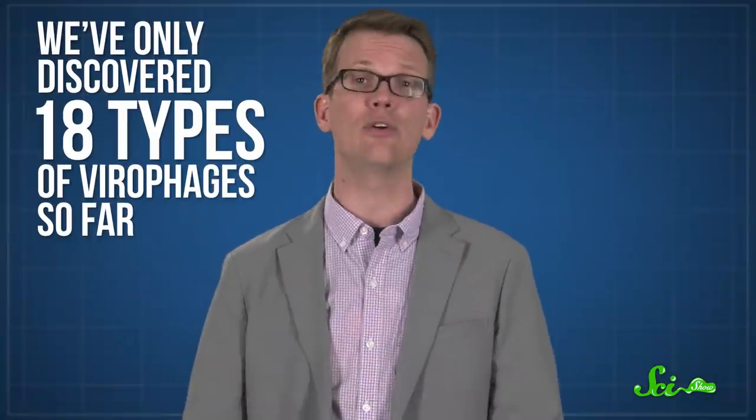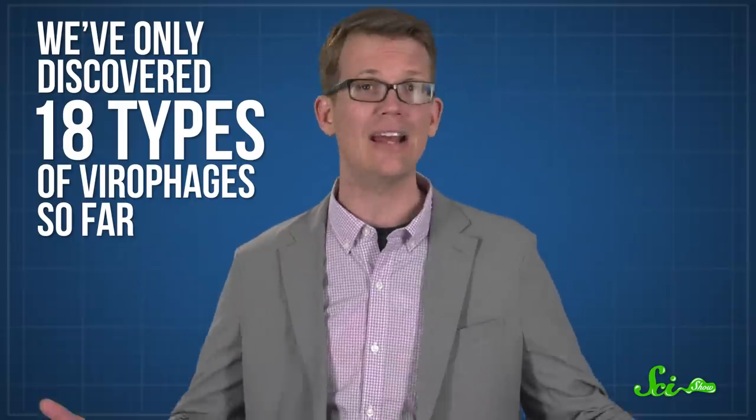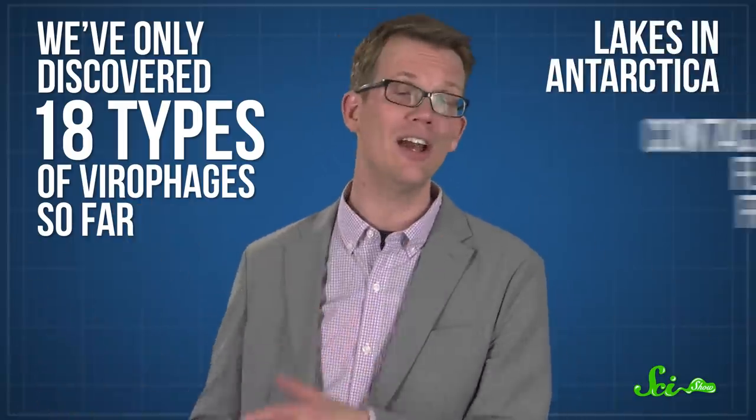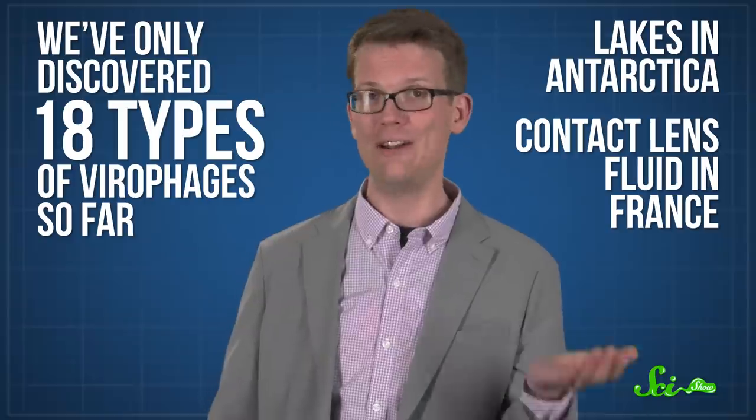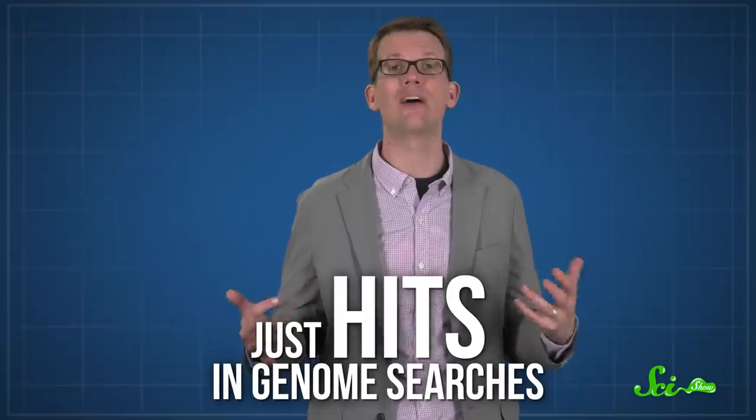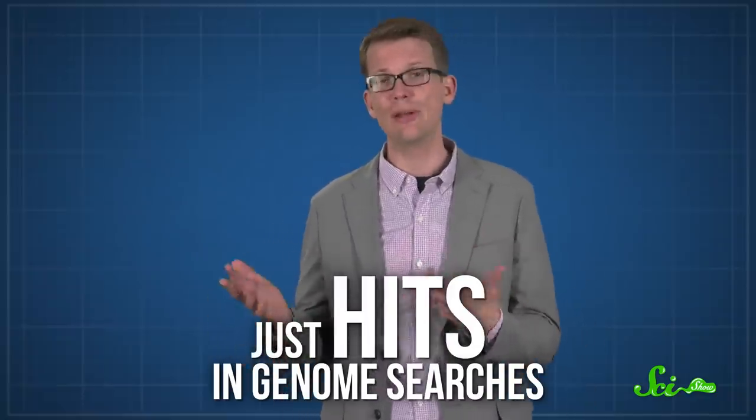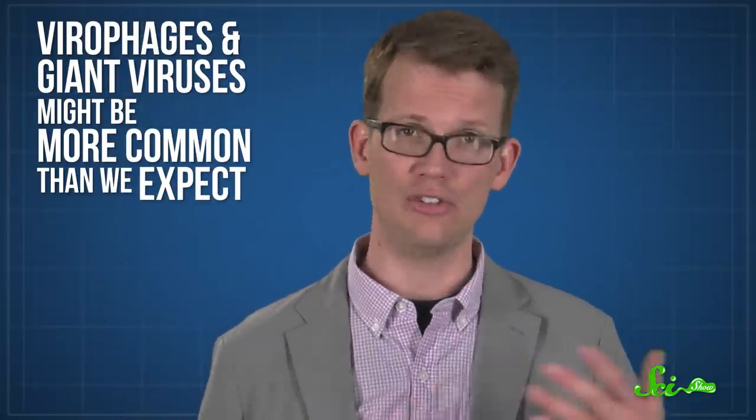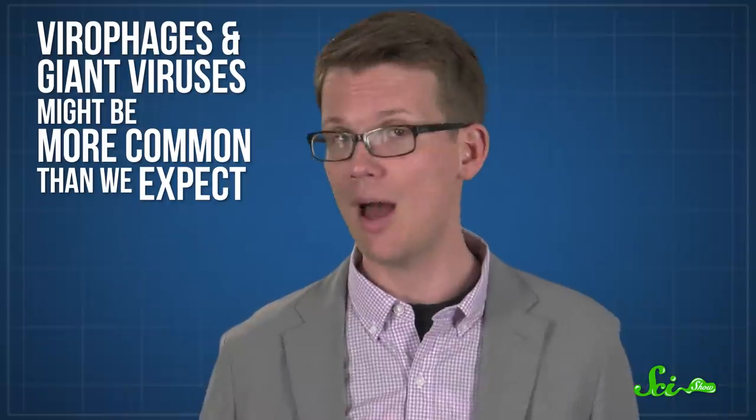At least according to some scientists. We've only discovered 18 types of virophages so far, in places as diverse as lakes in Antarctica to contact lens fluid in France. Many of those are just hits in genome searches, meaning sequences similar to known virophages have turned up in genomic studies. Nothing about them has actually been studied in detail yet, so we don't know what they look like or what they infect, which only sorta counts as discovering them. But it seems like there could be plenty more of them out there. And virophages and giant viruses might be more common than we expect.